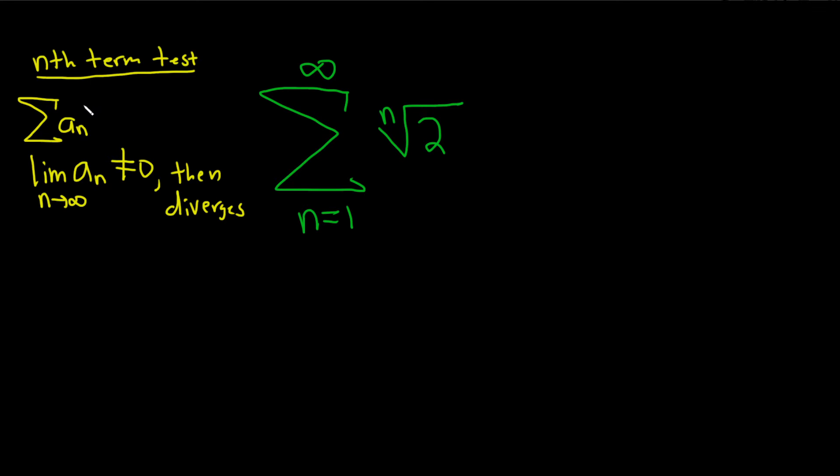So again, it says if this limit is not zero, then it diverges. So if the limit is zero, well, no information. Some textbooks call this the nth term test for divergence, just so that there's no confusion. People often use this incorrectly. You should never say something like, it converges by nth term test. That's actually impossible.